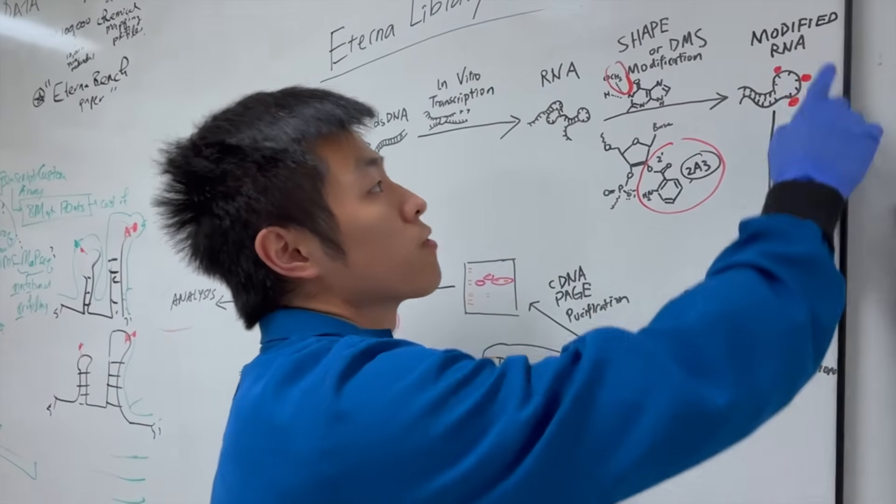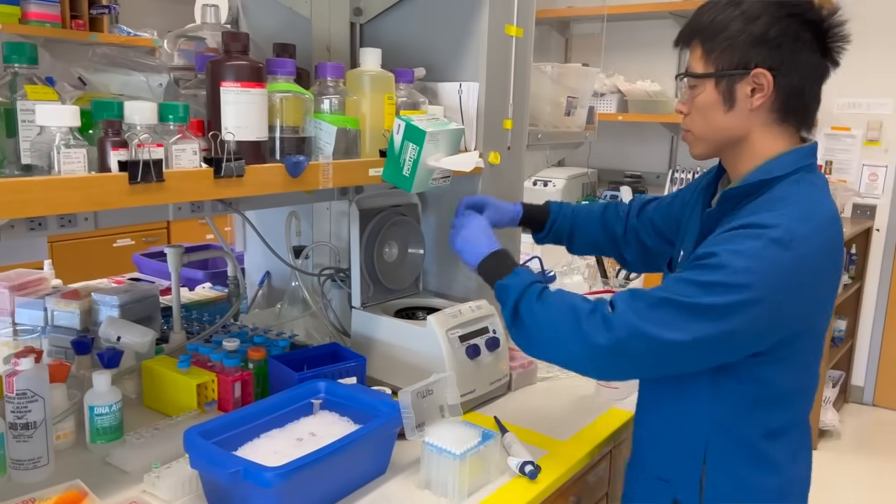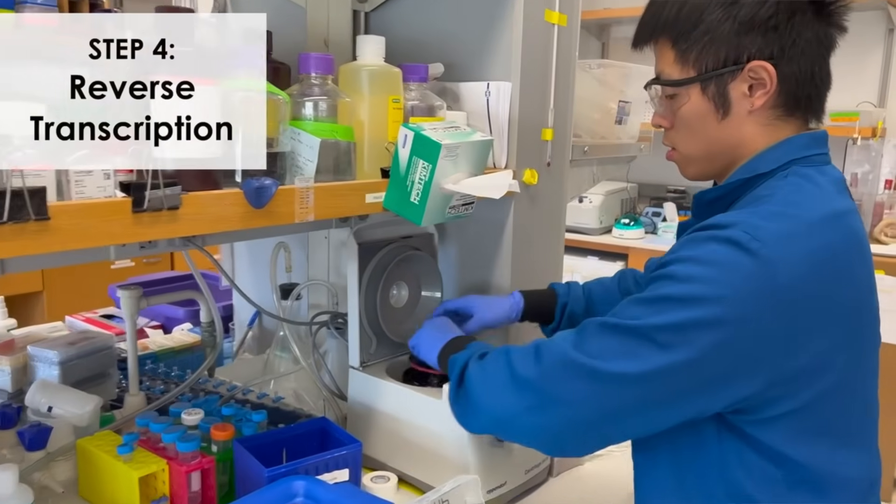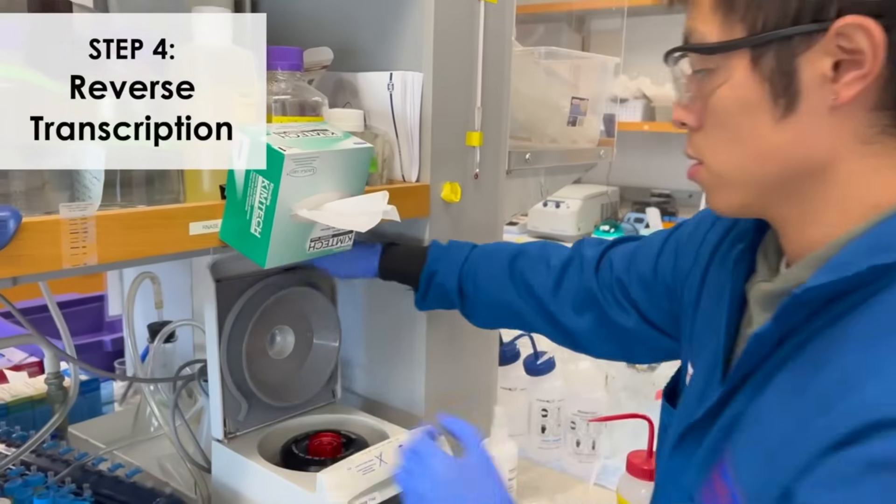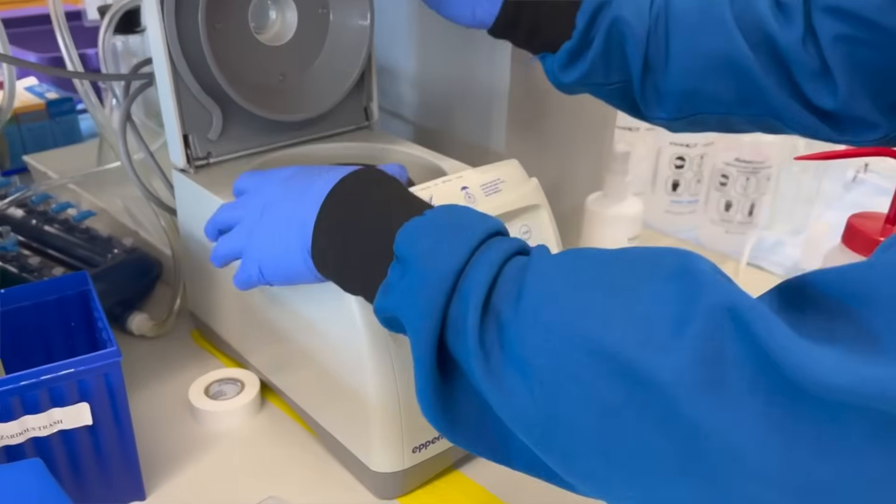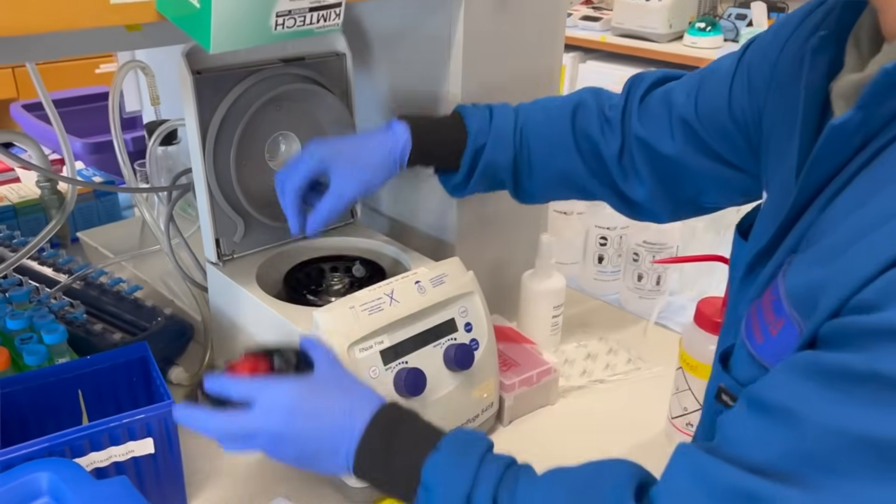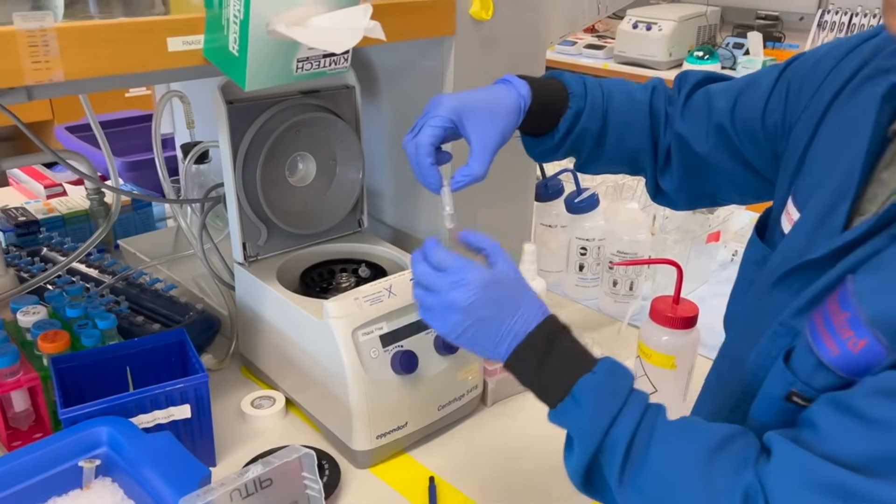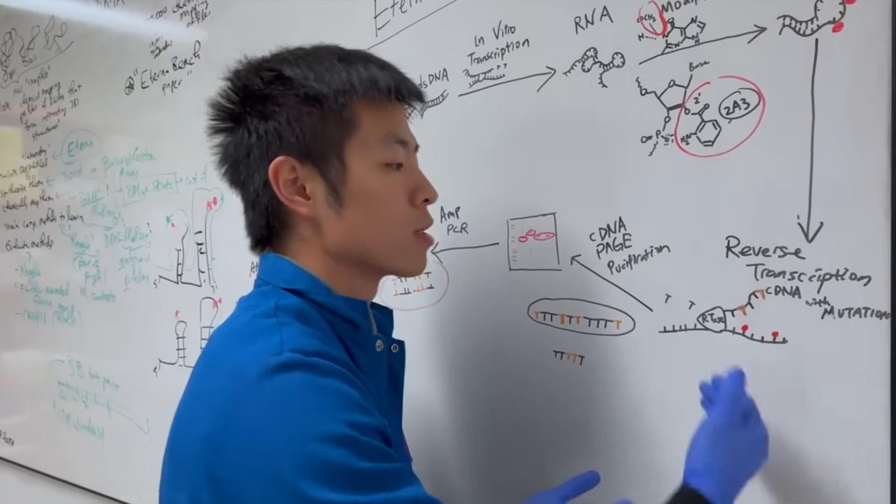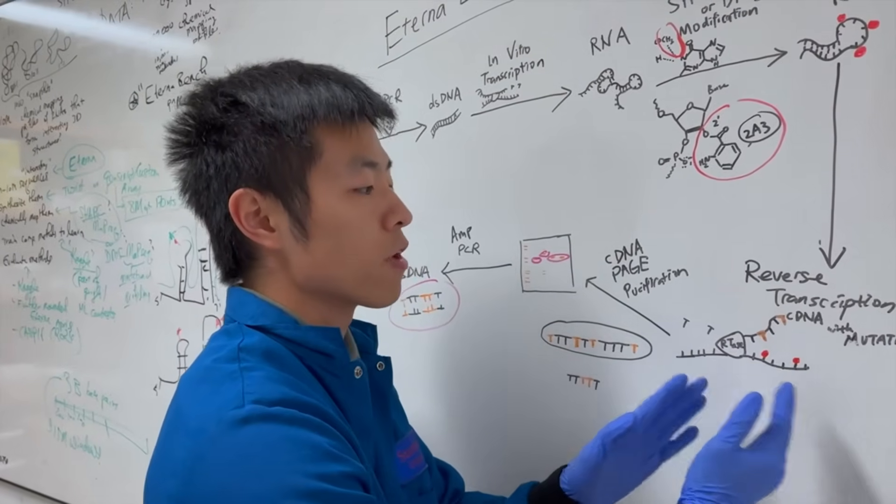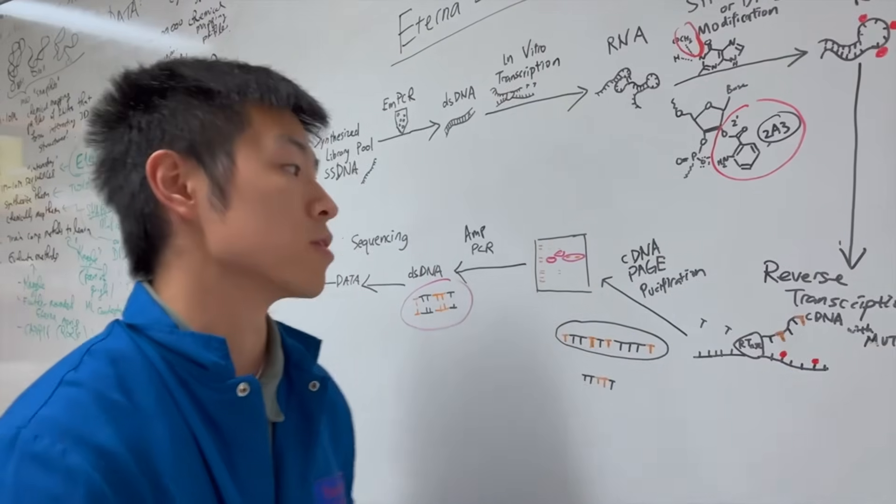So, after we get this modified RNAs, we're going to use that as a template for reverse transcription to generate our cDNA. So, the cDNA will have a mutation base corresponding to the modified base of the RNAs. So, this is the way we're going to transform this chemical modification of RNA into a mutated cDNA.